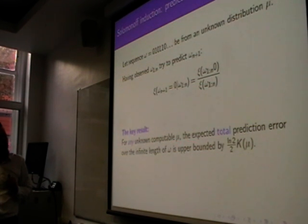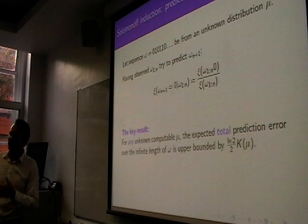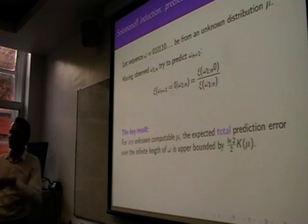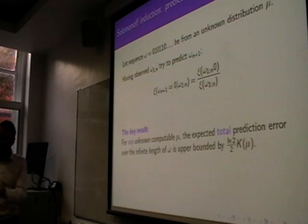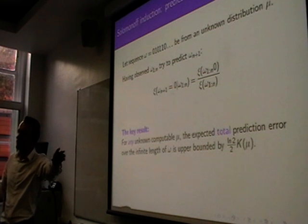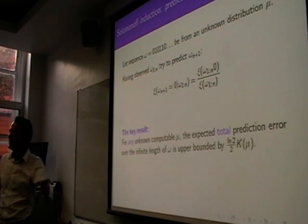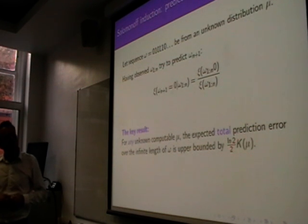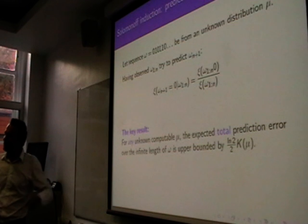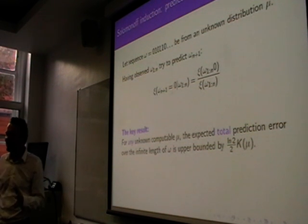And for any of these possible hypotheses about the world, and you don't even know what they are to start with, the expected total error, and I won't define exactly what that means, but it's basically the expected deviation between if you actually knew the correct answer versus if you're using this as a predictor. Over the infinite length. So, that's over all the predictions for the rest of infinity. It's bounded by a constant. There's a constant amount of error you're going to make, no matter what it is that's generating the distribution. And you look at this constant. That is the length of the shortest description of the actual generating mechanism. This thing is learning almost as fast as if you just told it the answer to start with. It's ridiculous.